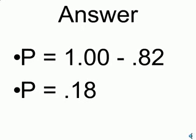There is another way to get that same answer. We could just say one minus the probability of no accidents, 0.82, gives us the probability of one or more accidents, 0.18.